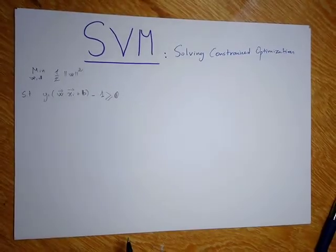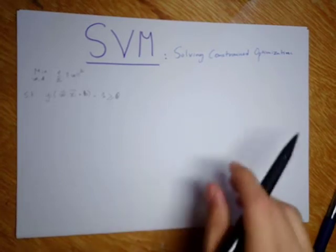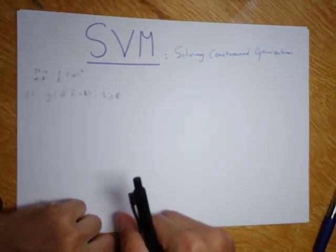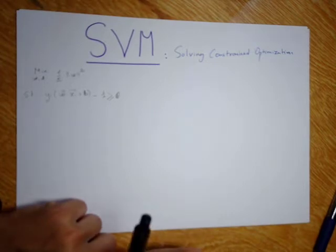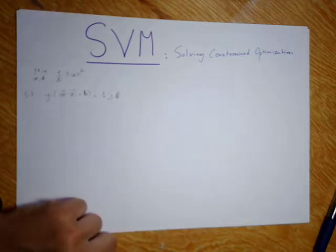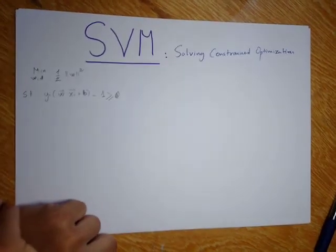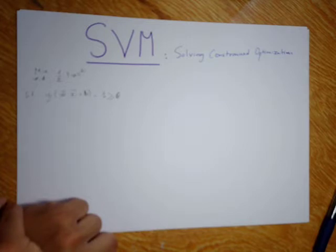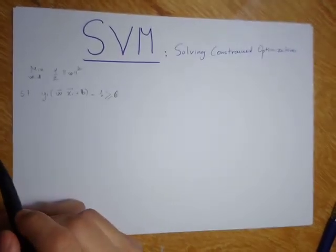To understand how to solve that, I decided to make a video about how to solve a constrained optimization problem in general, and I will particularly talk about how to do that using the Lagrangian technique. In SVM we use the Lagrangian because it allows us to use something called the kernel trick, which is a technique used to separate data that is non-linearly separable.